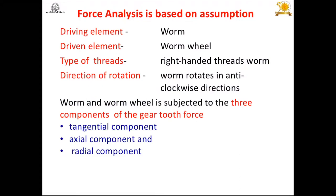The worm and worm wheel, or worm gear, is subjected to three components of gear tooth force. First is the tangential component, which is the required component to transmit the power. Second is the axial component, because the teeth are cut at some inclination — that is, the helix angle on the worm wheel or helix of the worm. Third is the radial component, which acts towards the center of the worm and worm wheel.